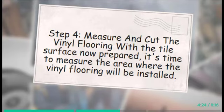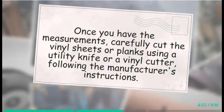Step 4: Measure and Cut the Vinyl Flooring. With the tile surface now prepared, it's time to measure the area where the vinyl flooring will be installed. Accurate measurements are crucial to ensure you purchase the right amount of vinyl. Once you have the measurements, carefully cut the vinyl sheets or planks using a utility knife or a vinyl cutter, following the manufacturer's instructions.